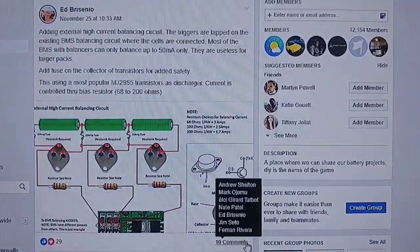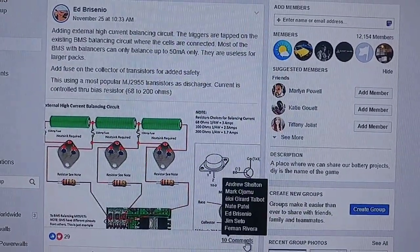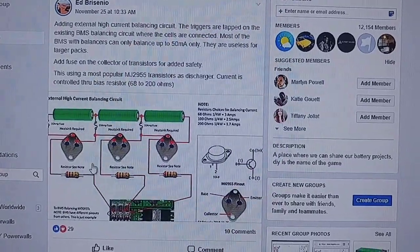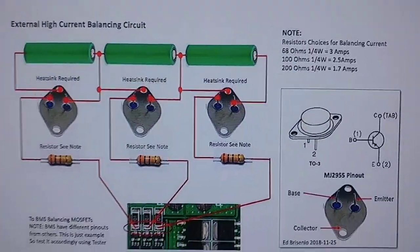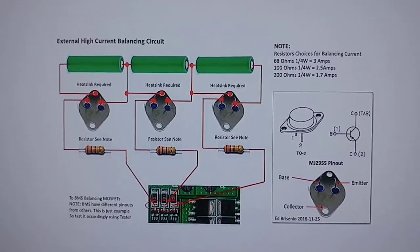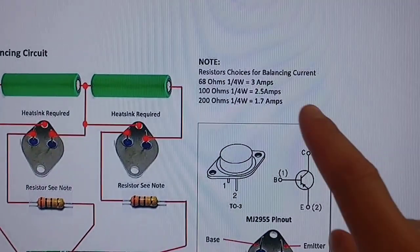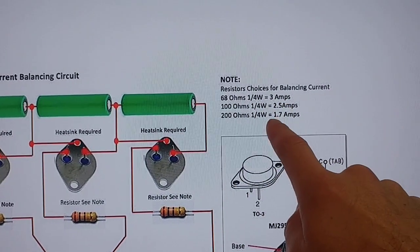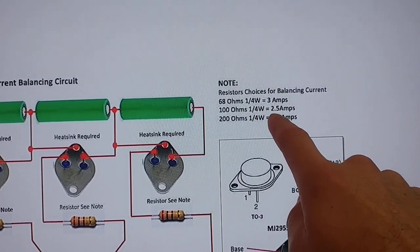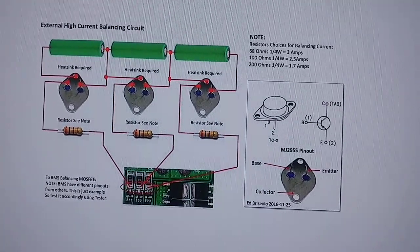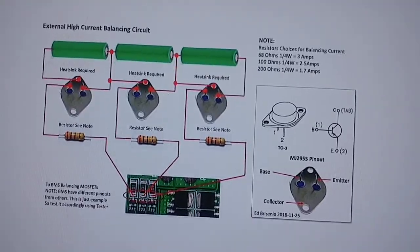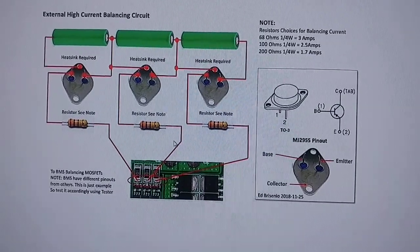Right, so this post by Ed Brisenio. So this is what he showed, it's really hard to, so this is the diagram he wrote up. It just requires a resistor, so based off this resistor here, you can have 1.7 amps, 2.5, or 3, which is extremely high balancing amperage meant for very large power walls. Okay.